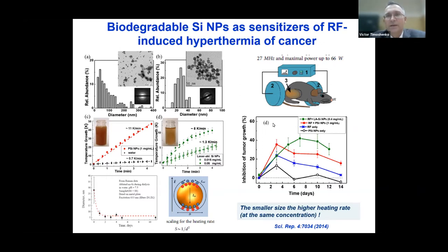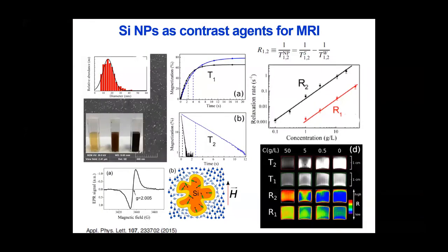Silicon nanoparticles with a certain amount of dangling bonds — specially designed high-density dangling bonds — can allow us to use silicon nanoparticles as contrast agents for MRI imaging. Here you see an example of how the rate of proton relaxation in aqueous solutions depends on the concentration of silicon nanoparticles with a high amount of dangling bonds.